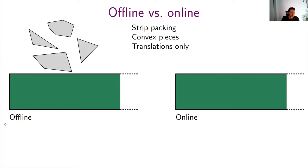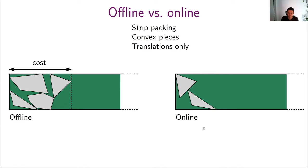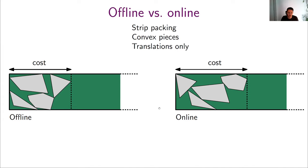In the offline version of the problem, you know all your pieces already and you can compute a good arrangement. The cost we pay is the amount of the strip we have used. In the online setting, we get the pieces one after the other — we get a piece, decide where to put it, then get another, and so on. The cost is the same: the amount used in the end. But it's more difficult. In this particular case we didn't use so much more than the offline solution, but the question is: how good can we actually do?